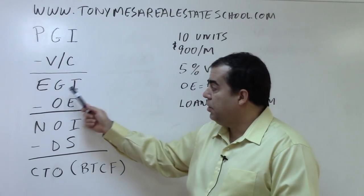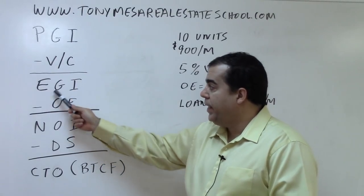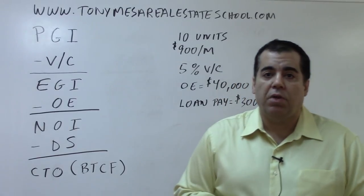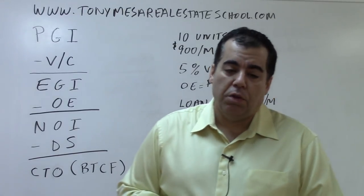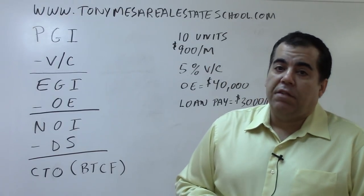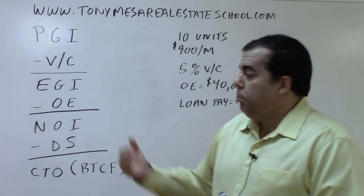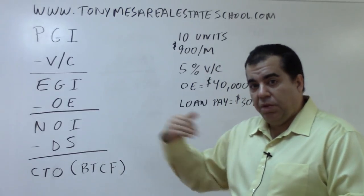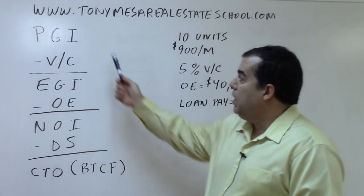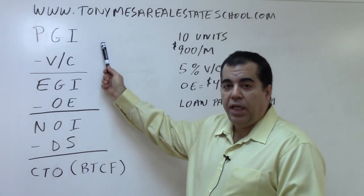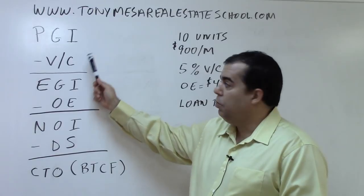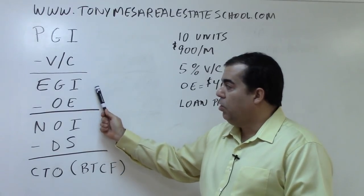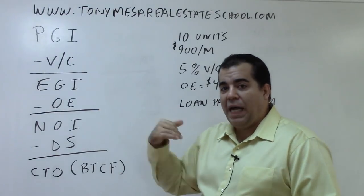From the Potential Gross Income we subtract the vacancy and collection losses, and we get the EGI — Effective Gross Income. The Effective Gross Income is how much money is really actually going to come in. You're not really going to get that full Potential Gross Income because you will always have some vacancy and collection losses.